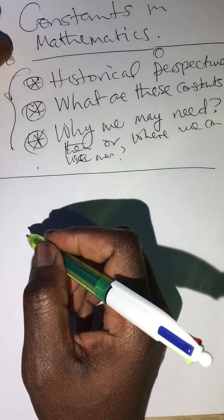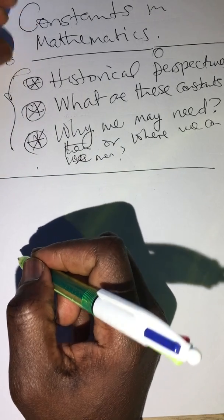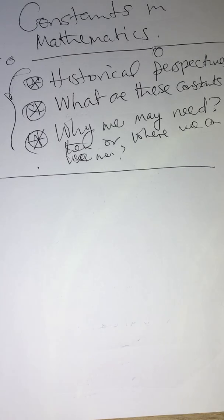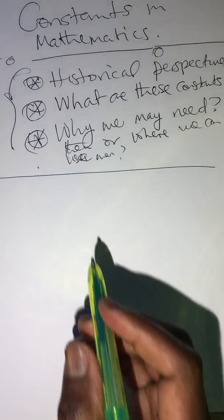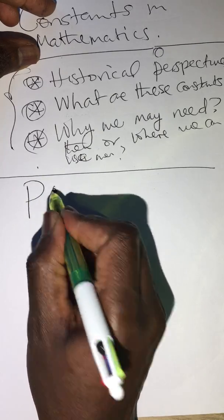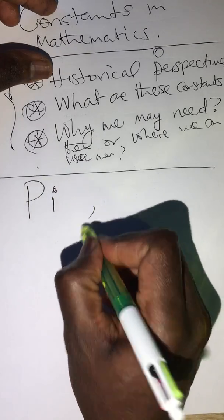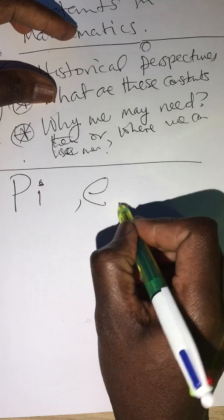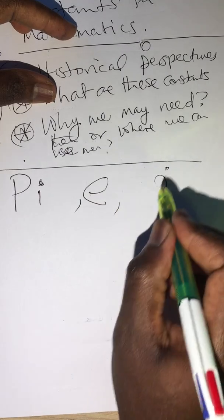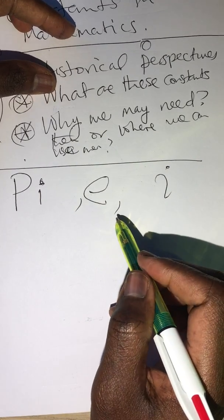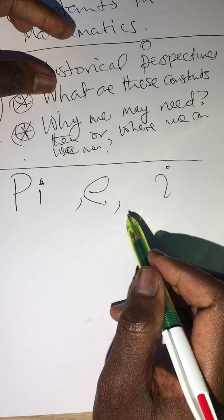So what are these constants in mathematics? These are the important numbers that we need to accomplish a specific task. For example, we have pi, we have e, and we have i. So these three are the most important constants in mathematics.